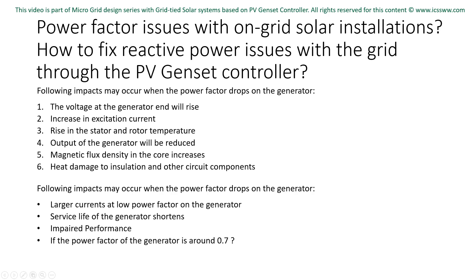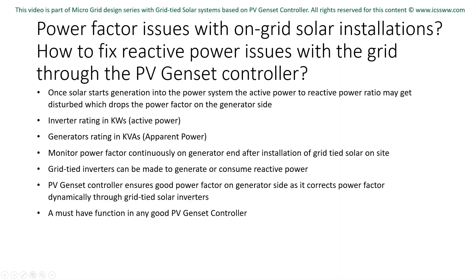For example, when the power factor of the generator is around 0.7, the output of the generator will be reduced by 8%. Interesting fact — most of the time when you buy an inverter, you will see its power rating in kilowatts, which is active power. On the other hand, when studying diesel or gas generators, evaluation of KVA, which is apparent power, is considered.